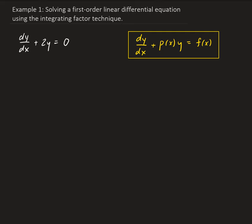If we had, for example, a 2 in front of the dy/dx, then we would have to divide through by 2 to put it in standard form. There will be some examples of that later on.